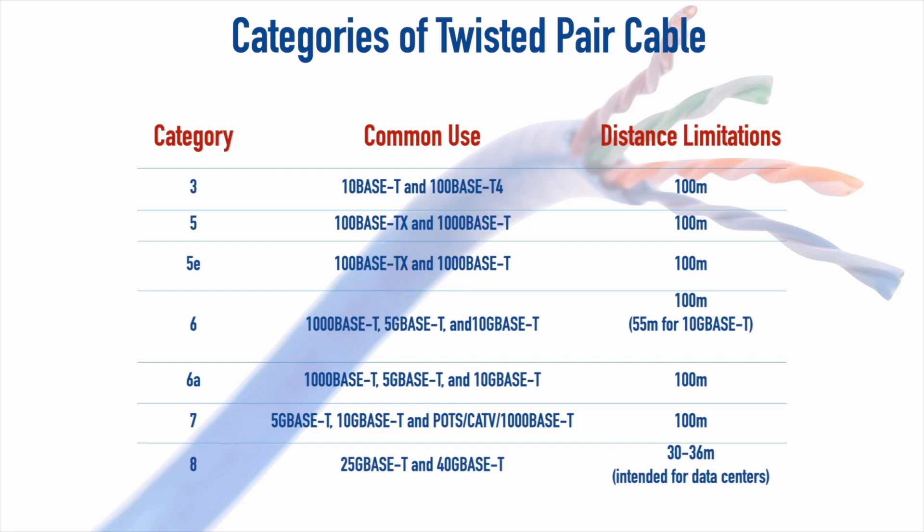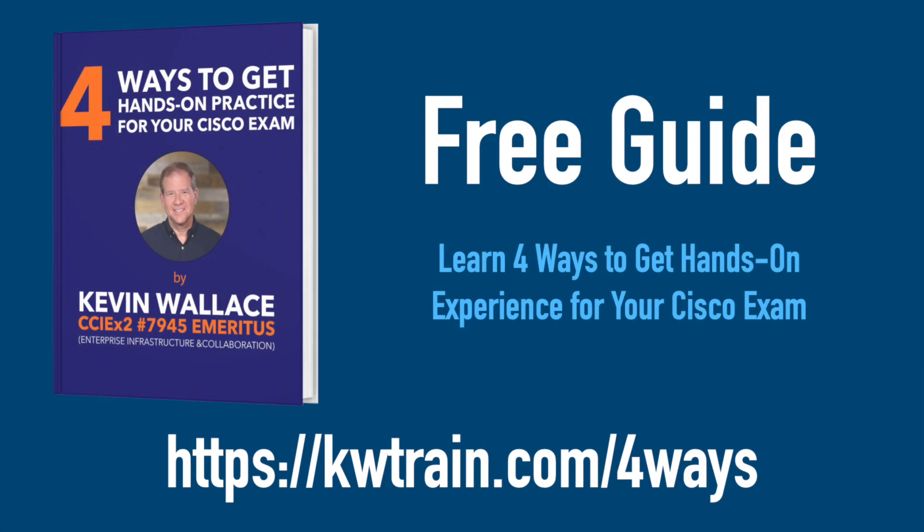In a data center environment where cable lengths are typically shorter, you might encounter Category 8, which can do 25GBaseT or even 40GBaseT at 40 gigabits per second. However, the distance limitation is in the range of about 30 to 36 meters. Category 8 is intended for data center use, not building infrastructure cabling, because of that distance limitation.